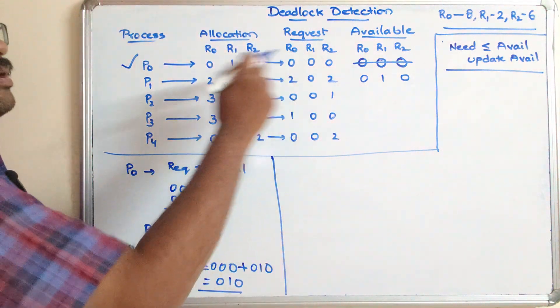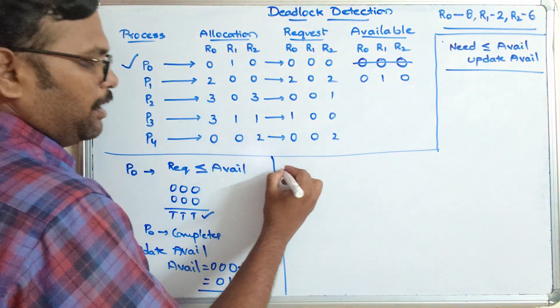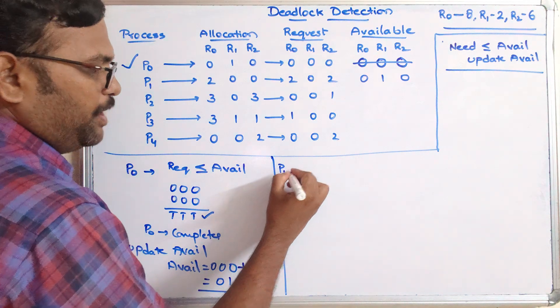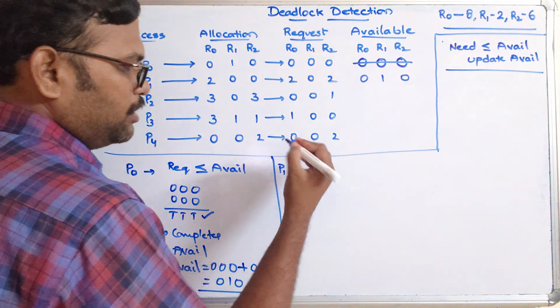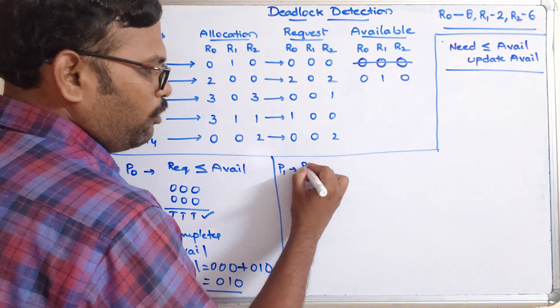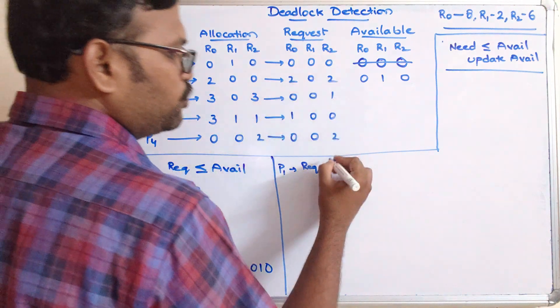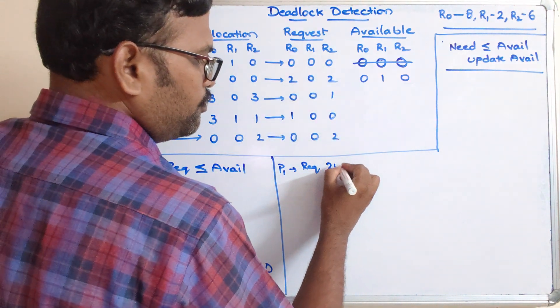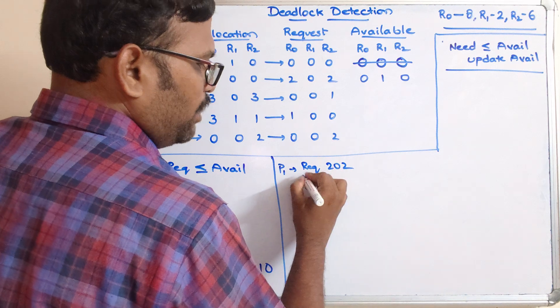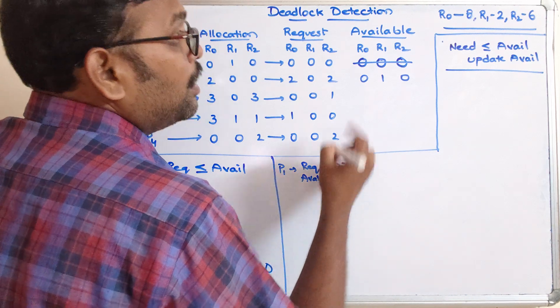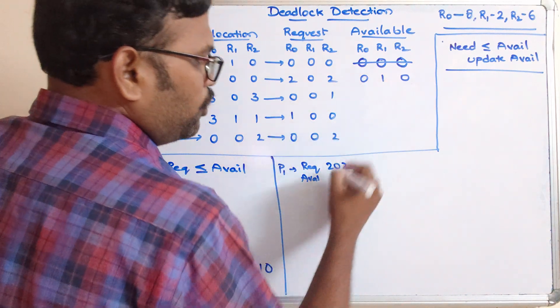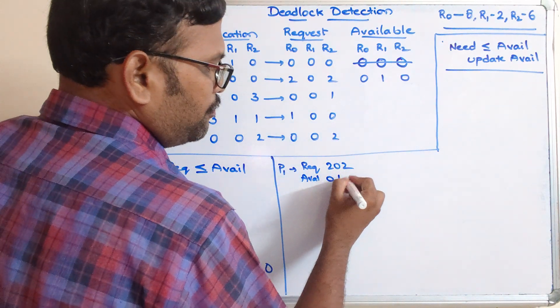Now consider P1. P1's required resources are 2,0,2, and the current availability is 0,1,0.